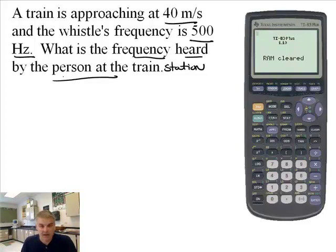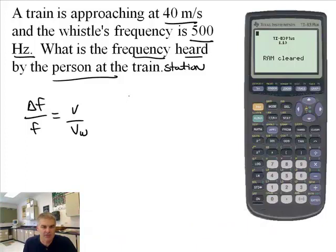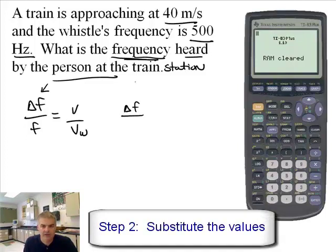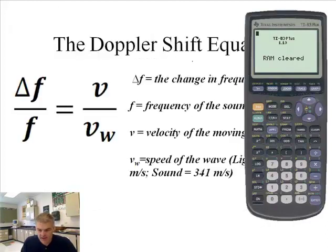Let's look at our equation. First thing you want to do is copy down the equation. So, delta F over F is equal to V over VW. So, what does each thing represent? The change in the frequency. I'm asking what is the frequency. So, we're actually going to try and find delta F. So, delta F over the frequency. The sound being produced by this particular train whistle is 500 hertz. I'm just going to plug in what I know. Is equal to the velocity the train is moving at 40 meters per second divided by the speed of the wave. The wave we have right here is sound. And sound travels at 341 meters per second.